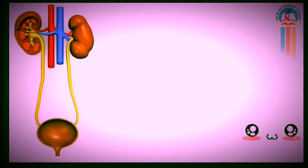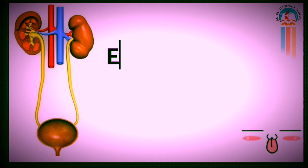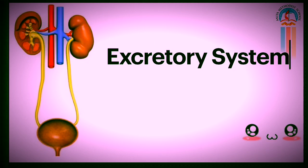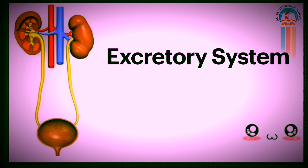So today we are going to learn about the excretory system. The excretory system regulates water and electrolytic balance. Kidneys, lungs, liver and skin together function as the excretory system.